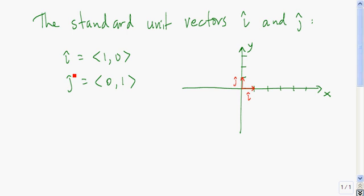Not all books use the hat notation. Sometimes they'll just denote this vector <1, 0> with a very bold-faced i and the vector <0, 1> with a bold-faced j. So those just refer to the standard unit vectors in the x-y plane.